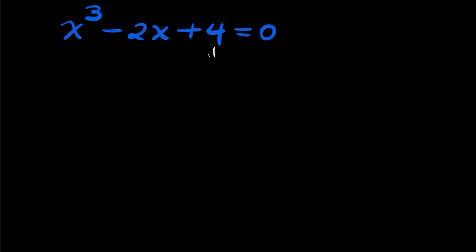From this constant term we will try 1, 2, 4 and also -1, -2, and -4. Let me just say x = -2. If we put this into the equation: (-2)³ - 2(-2) + 4.